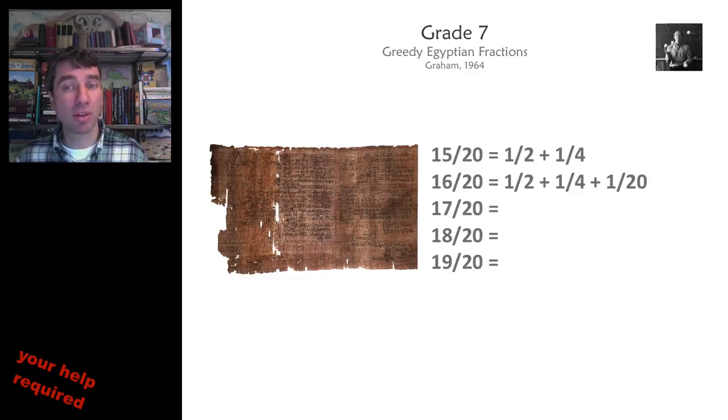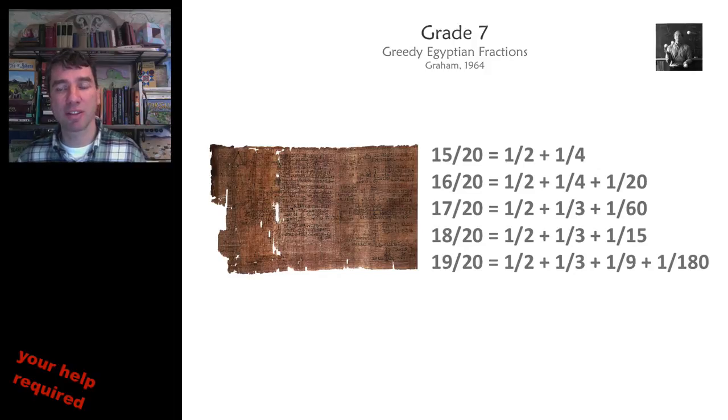And that leaves just 1 quarter. So you can do that for any number, and it's guaranteed that that's going to end in a finite number of steps. So for example, 17 over 20, you can take out 1 half. And what do you take out next? You don't take out a quarter because a third is a bigger Egyptian fraction, and it goes in there. So this is the solution for 17 over 20, 18 over 20, 19 over 20.